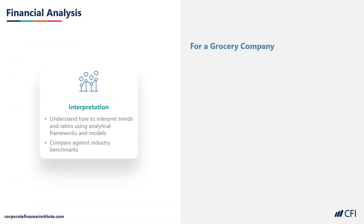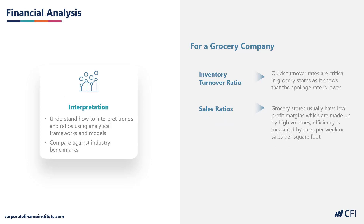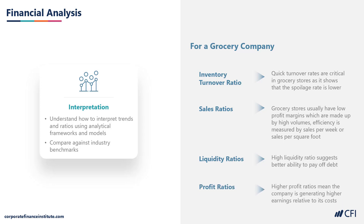Let's look at how we would interpret these ratios. For inventory turnover, it's important that a grocery business has very quickly moving inventory so that food doesn't go bad. When it comes to sales ratios, since grocery stores have low margins, they need high volumes — so being efficient, meaning selling more revenue per square foot, is very important. In terms of liquidity, having more current assets than current liabilities shows the ability to pay off debt quickly. And when it comes to profitability, all else being equal, the higher the profit ratios are, the better.